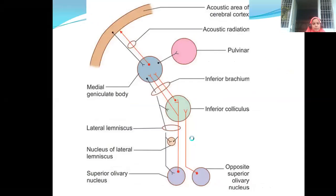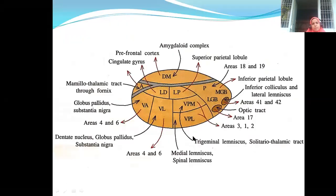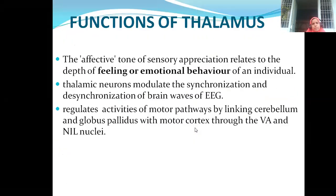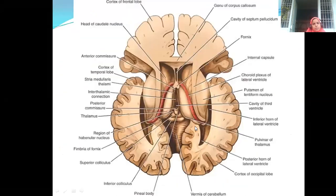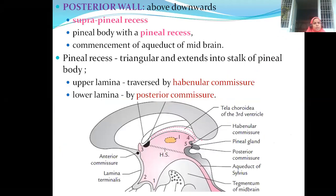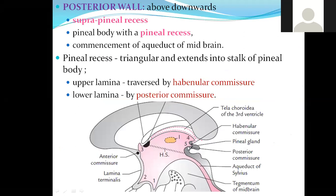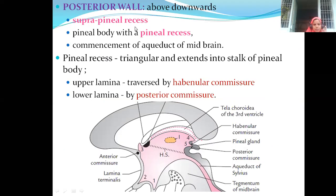So we were here — the third ventricle posterior wall. We have certain extensions called recesses. Number five is the pineal recess, above the pineal gland. Number four is the suprapineal recess. The pineal recess, number five, is triangular and extends to a point called the stalk of the pineal body.